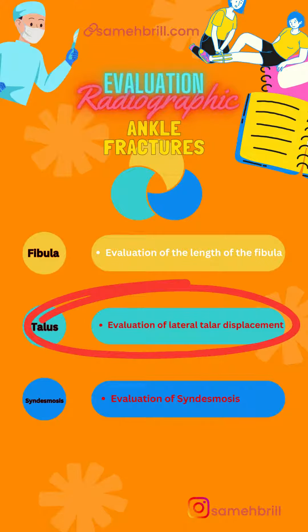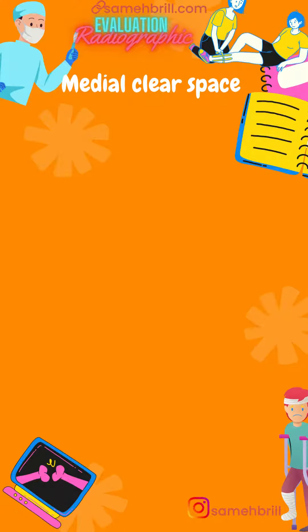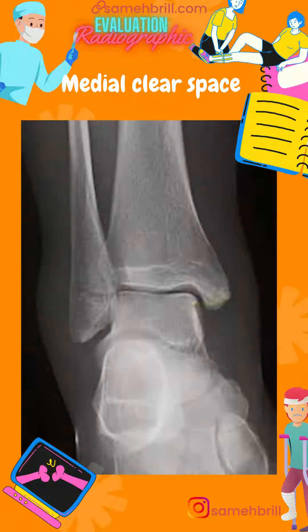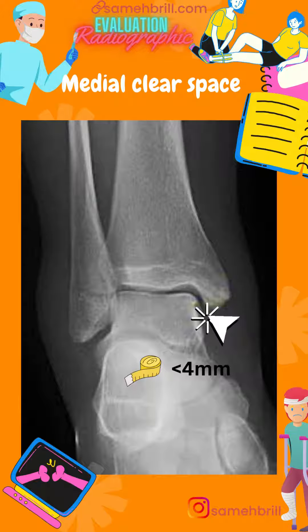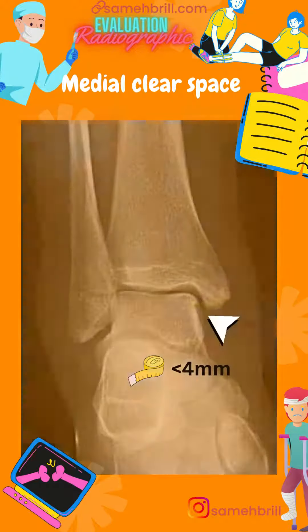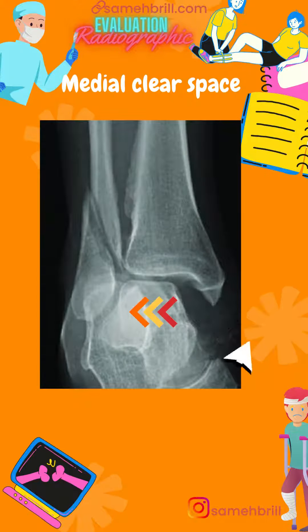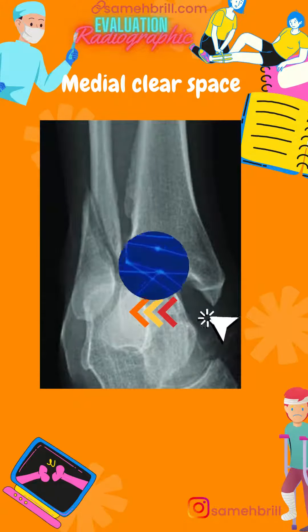Moving on to the evaluation of lateral displacement of the talus, we have a single parameter: the medial clear space. The medial clear space is best assessed on a mortise view. It is the widest distance between the medial aspect of the talus and the medial malleolus. A medial clear space greater than four millimeters is considered abnormal and indicates talar shift secondary to medial lesions such as deltoid ligament disruption.